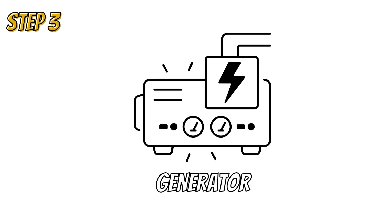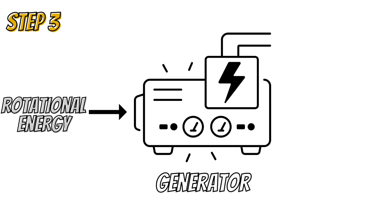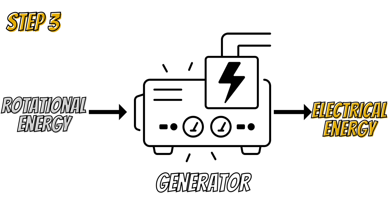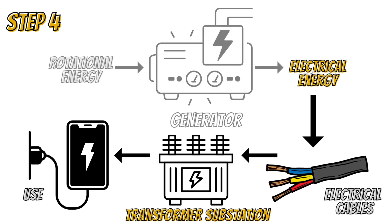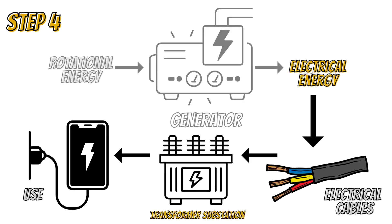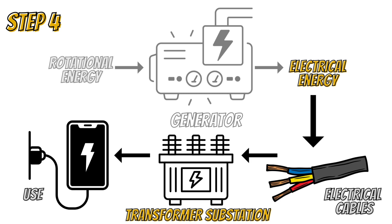This leads us to the generator, where the rotary energy is converted into electrical energy. The electrical energy then passes through underground cables to a transformer substation, and from there the energy is directed to us to power our devices.